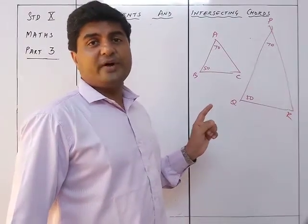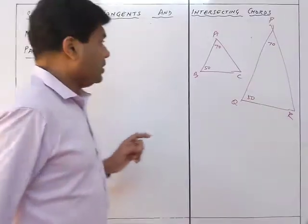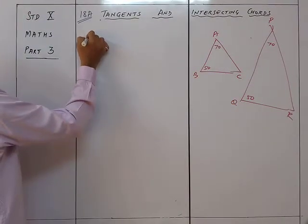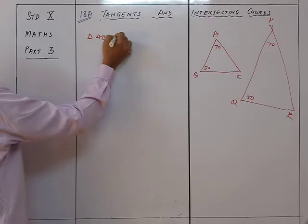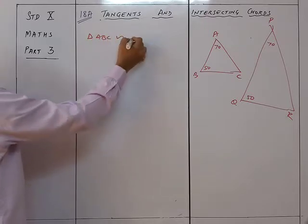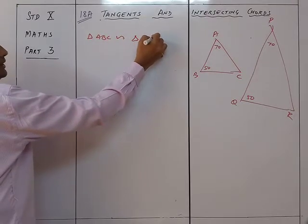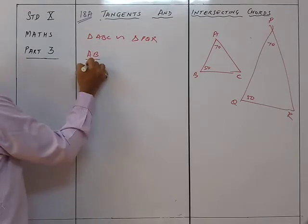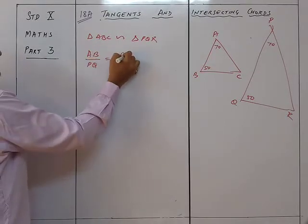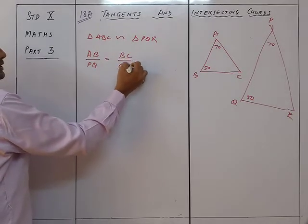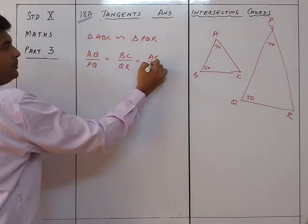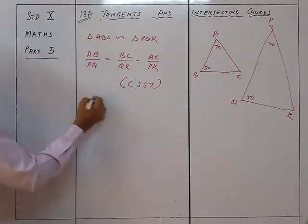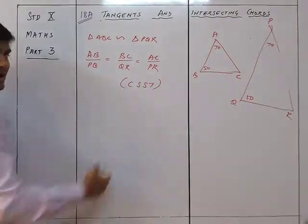By CSST — corresponding sides of similar triangles — if triangle ABC is similar to triangle PQR, then AB/PQ = BC/QR = AC/PR. For example, if one side is 1 and the corresponding side is 5, then if the second side is 2 the corresponding is 10, and if the third is 3 the corresponding is 15 — all ratios equal 1/5.